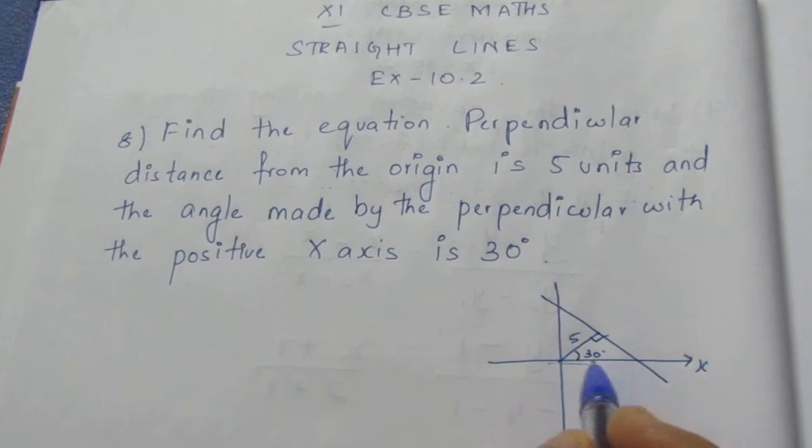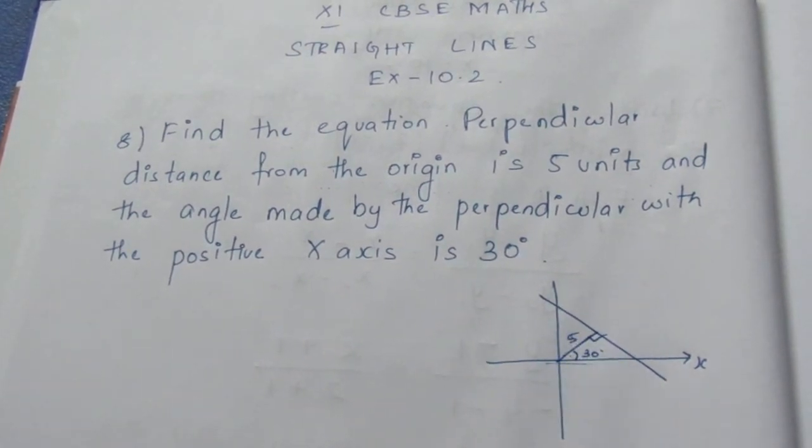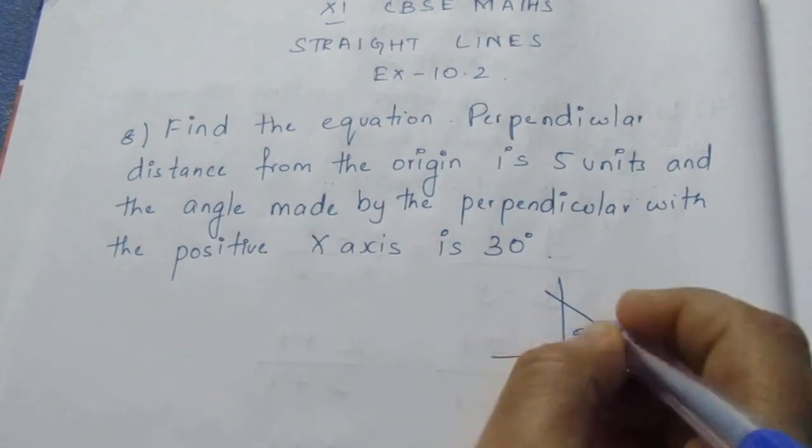So the perpendicular and the positive side of x-axis makes a 30 degree angle. This length is 5 units. Now we need to find the equation of this line.